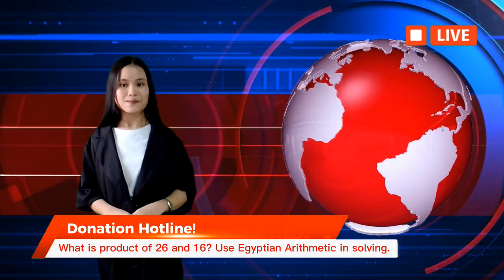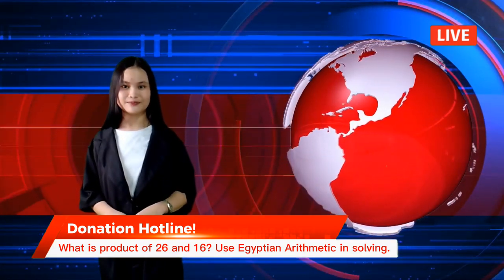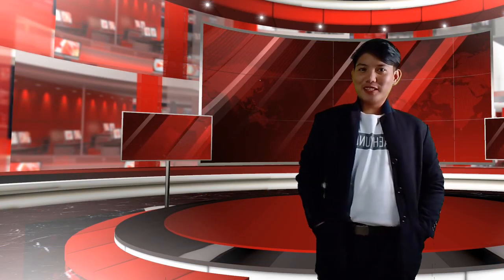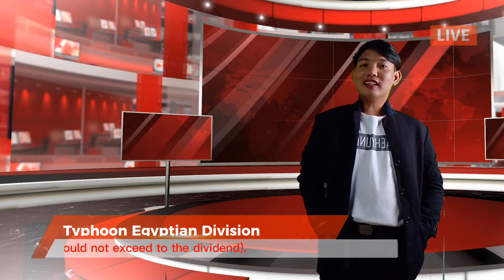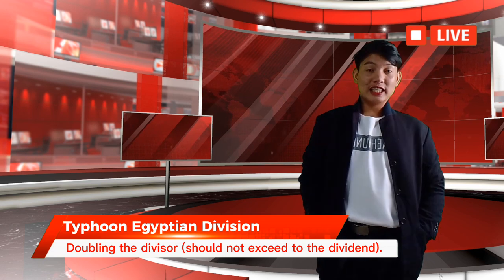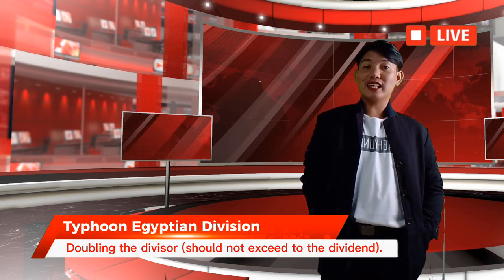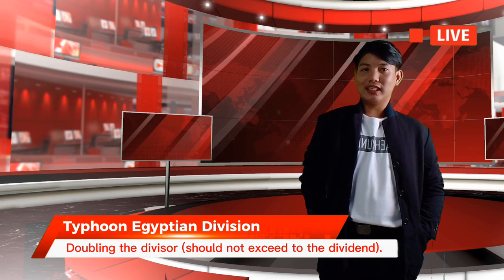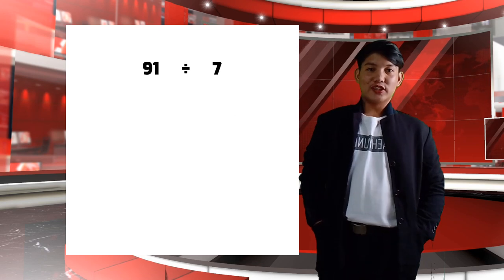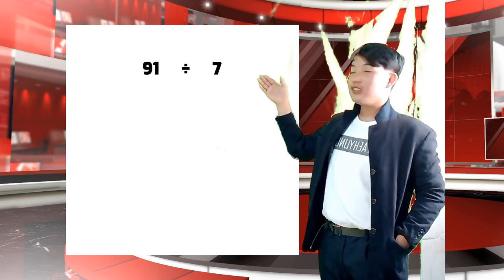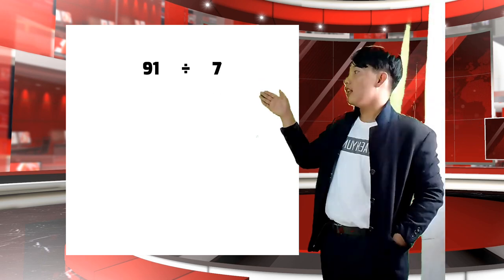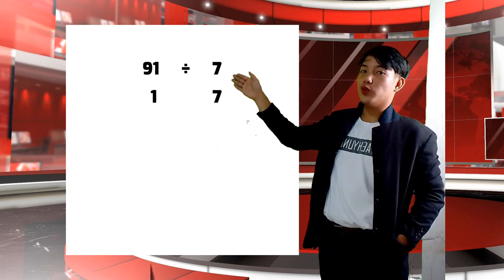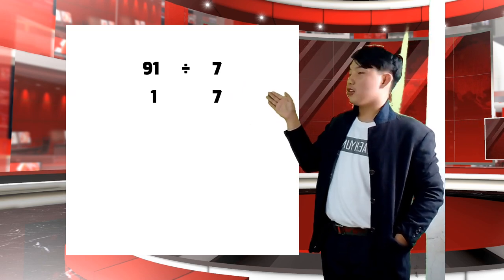Moving on, Mr. Torres, it's your turn. Thank you, Ms. Gondales and Ms. Yere. Typhoon Egyptian Division begins by doubling the divisor to the point at which the next duplication would exceed the dividend. To divide 91 by 7, we begin by doubling the divisor 7. The value on the left side always begins at 1, then we copy the divisor, which is 7, and apply the doubling method.